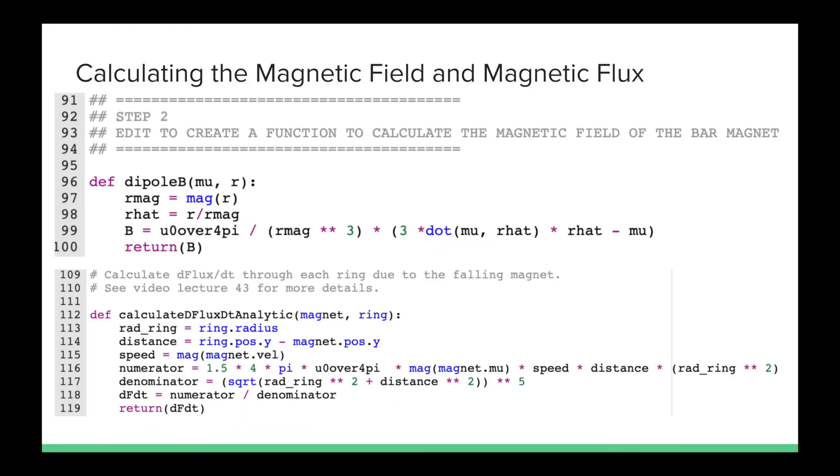In order to calculate the magnetic field, we must create a function that uses the Biot-Savart law to calculate the magnetic field at position r. We also have to calculate the change in magnetic flux due to the falling magnet, which is calculated using Faraday's law.